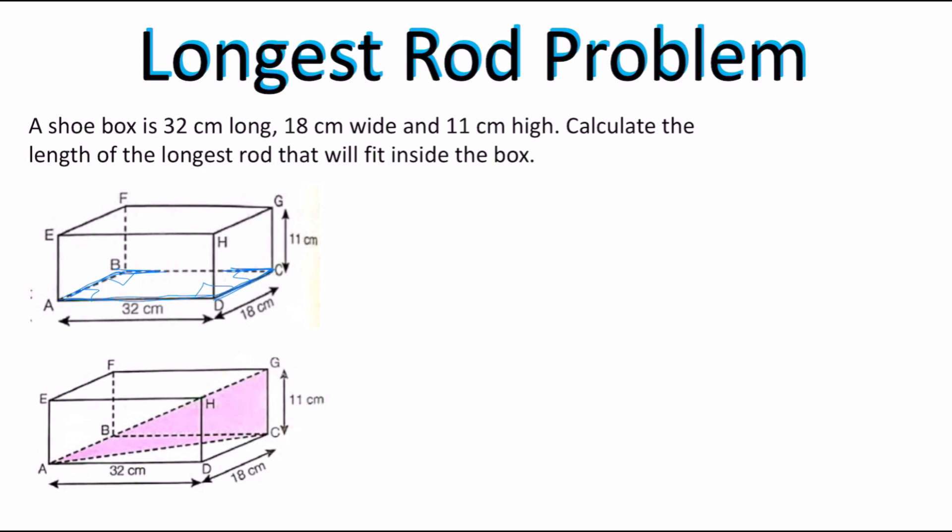So in order to determine the longest diagonal that fits in this box, you connect it from the front corner all the way to the back corner. In this case I'm going from A to G, but it would be the same as going from C to E, or from D to F. All of those would be the longest diagonal fitting inside this rectangular solid.